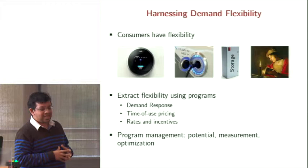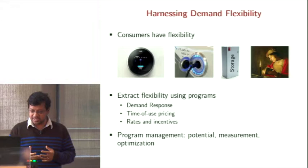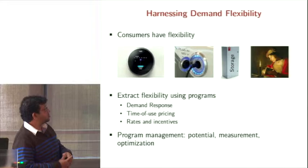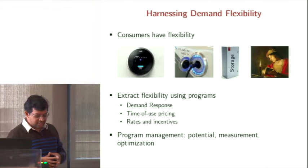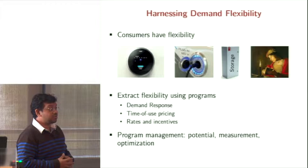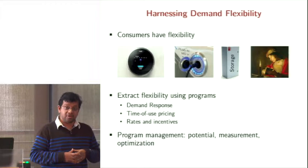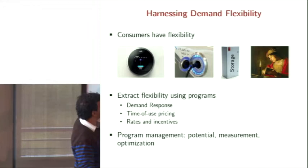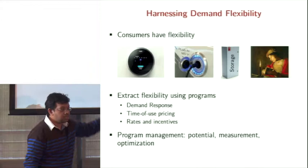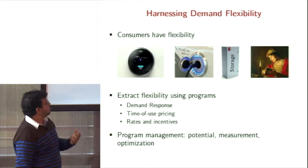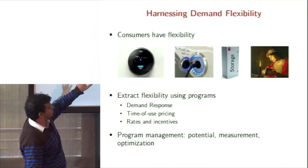Customers are starting to have way more demand flexibility — Nest thermostats, electric vehicles, home storage, and even behavior changes such as working from home, which can impact how much electricity you consume and where that electricity is localized in time and space. Typically, utilities have looked into understanding behavior by running programs like demand response, time-of-use pricing, or different rates and incentives. But they have had a very hard time understanding and predicting the impact on a customer-by-customer basis.